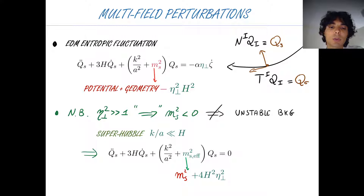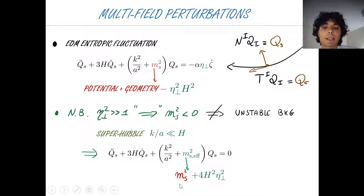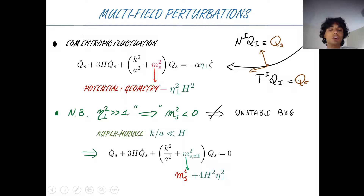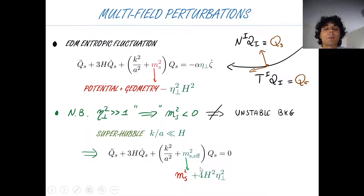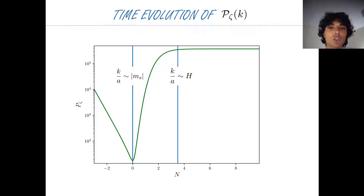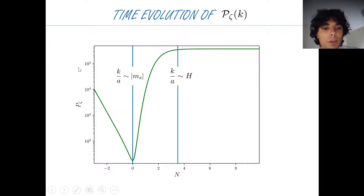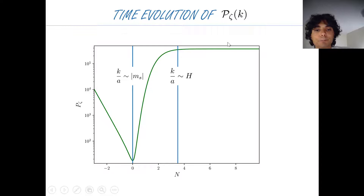This does not mean the background is unstable, which is crucial. If you look at the perturbation equation on super-horizon scales, you can integrate zeta with a first integral and see that the entropic fluctuation decouples with an effective mass given by the entropic mass plus a term proportional to the bending. In a region of strong bending, you can have a negative entropic mass while the background remains stable and perturbations are well-behaved on super-horizon scales. This is visible in the time evolution of the power spectrum for a given k-mode: it decays as usual, then is exponentially amplified when the entropic mass crosses zero, and then freezes and behaves well on super-horizon scales.